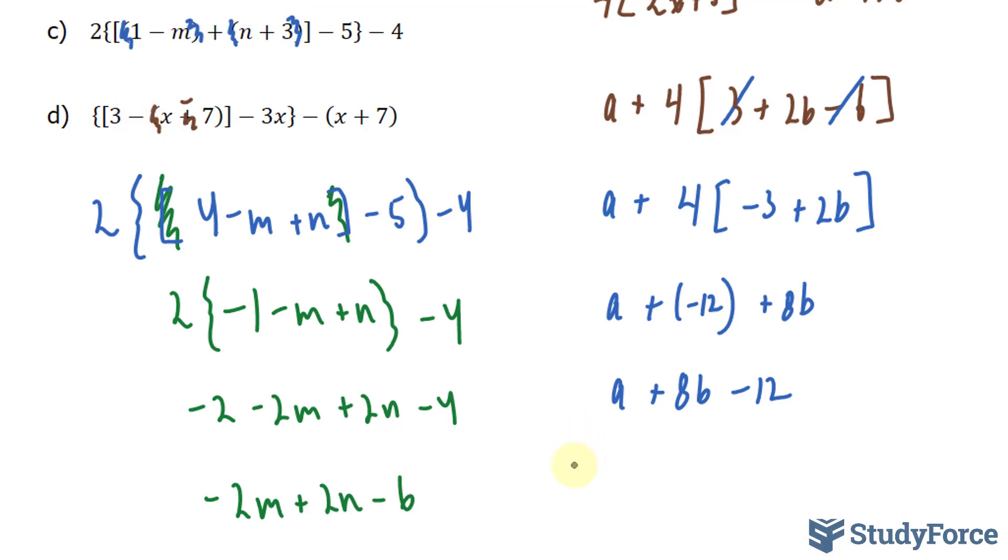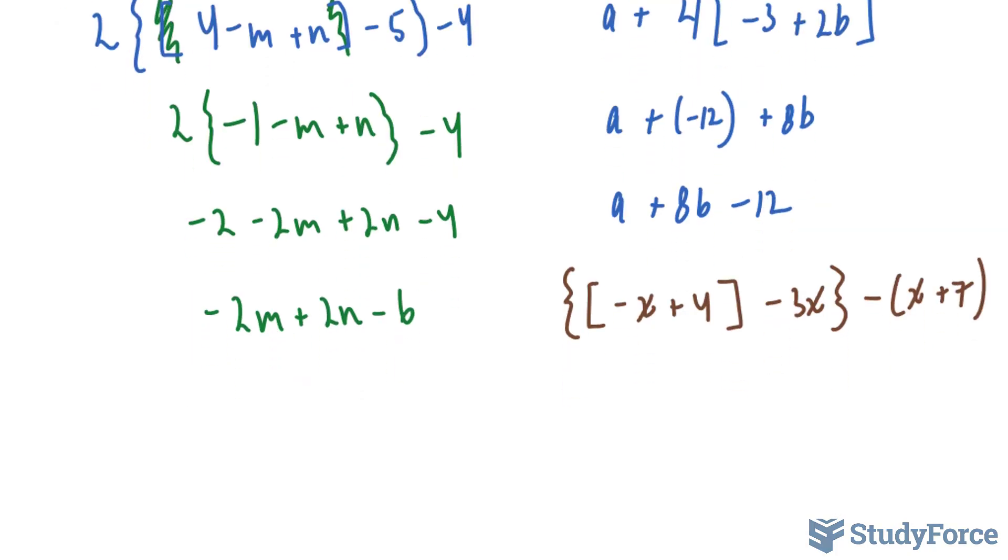Let's keep that in mind. We have the curly brackets: {-x + 4} - 3x - (x + 7). We can expand this negative into the x and the 7. This gives us -x - 7. And -x - 3x is -4x, so we have {-4x + 4}.